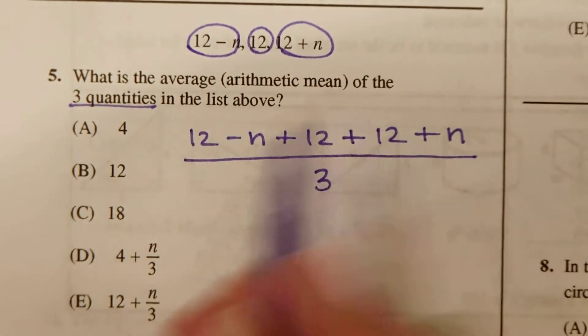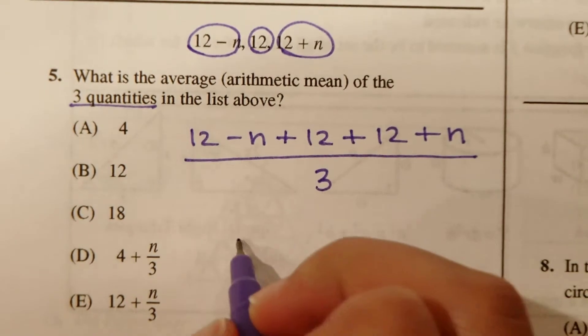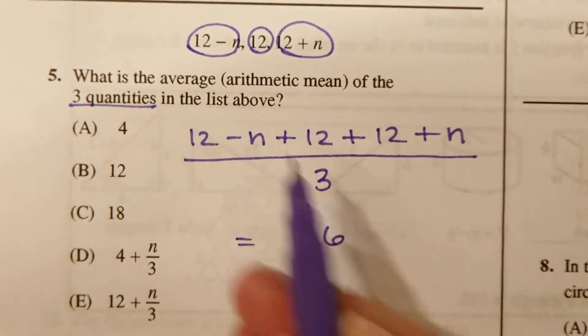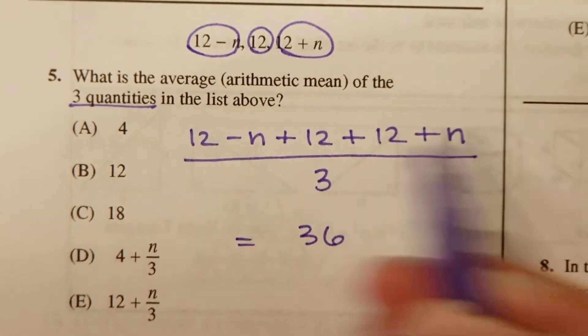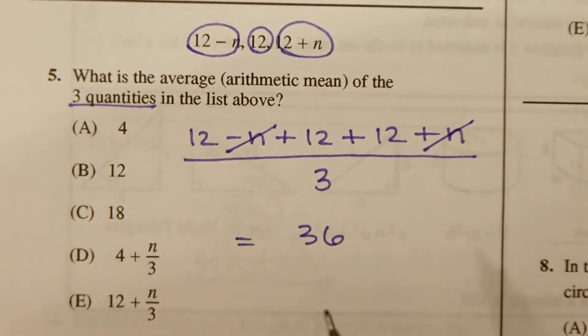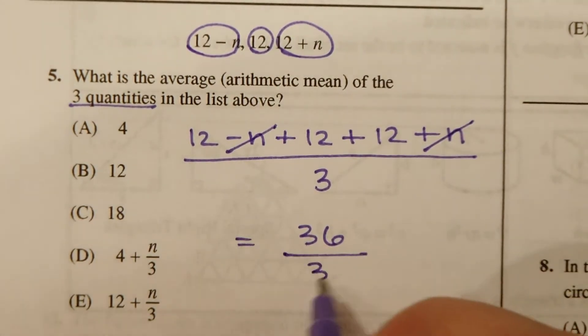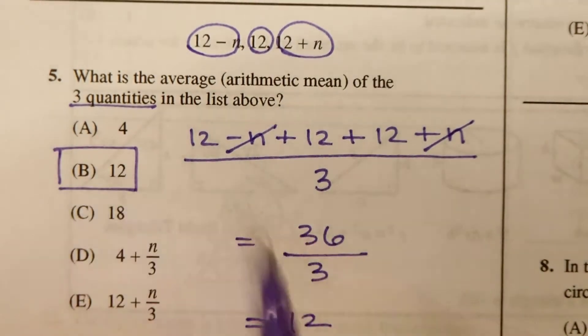So now let's just simplify this. 12 plus 12 plus 12 equals 36. Minus n plus n, that's going to cancel out. That equals 0n. So this is just going to be 36 over 3, which equals 12. So our answer is B.